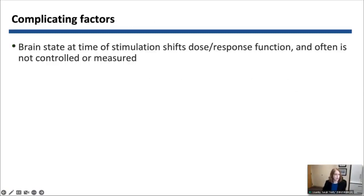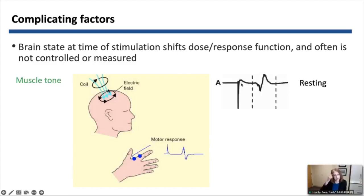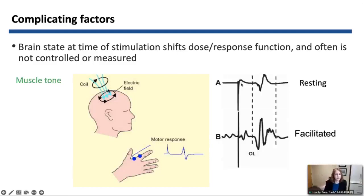There are some complicating factors. The brain state at the time of stimulation will shift the dose response function, and the brain state is often not controlled or measured. A simple example of that is the motor evoked potential, which is influenced by muscle tone — at rest versus when there's increased muscle tone, you will increase the motor evoked potential.